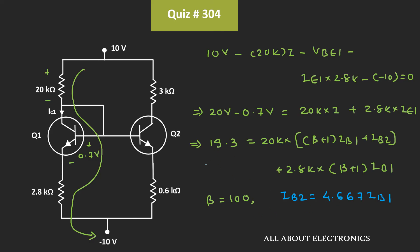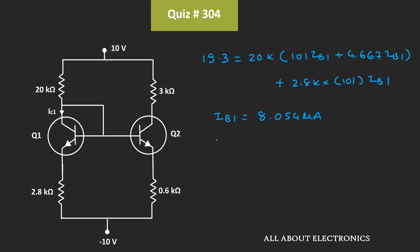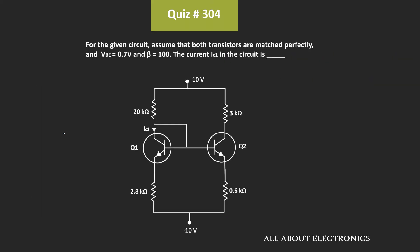Putting all these values, we can write: 19.3 equals 20kΩ times 101 times IB1 plus 4.667 times IB1, plus 2.8kΩ times 101 times IB1. Simplifying this expression, the base current IB1 comes out as 8.054μA. From this, the collector current IC1 equals β times IB1, that is 100 times 8.054μA, which equals 0.8054mA. Therefore, the current IC1 in the given circuit is equal to 0.8054mA.